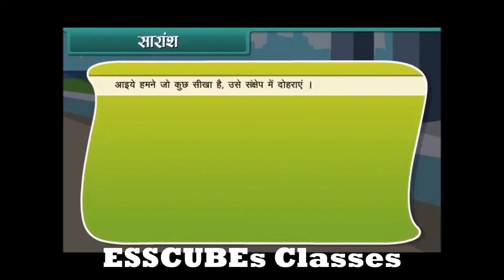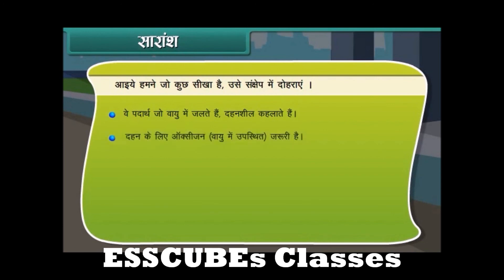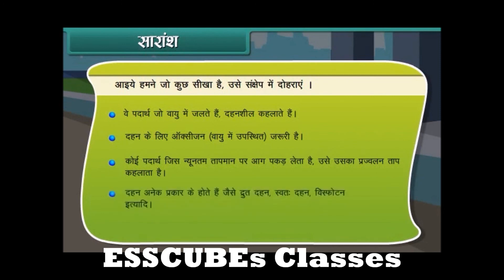सारांश: आइए हमने जो कुछ सीखा है उसे संक्षेप में दोहराएं। वे पदार्थ जो वायु में जलते हैं, दहनशील कहलाते हैं। दहन के लिए ऑक्सीजन जरूरी है। जिस न्यूनतम तापमान पर कोई पदार्थ आग पकड़ लेता है उसे उसका प्रज्वलन ताप कहते हैं। दहन अनेक प्रकार के होते हैं — जैसे द्रुत दहन, स्वतः दहन, विस्फोटन इत्यादि।